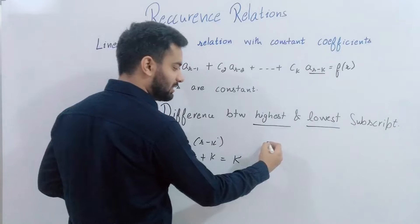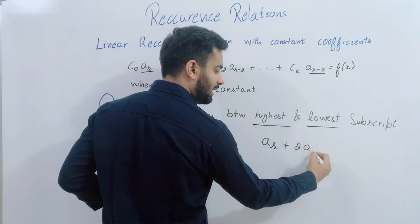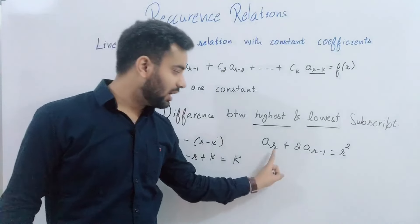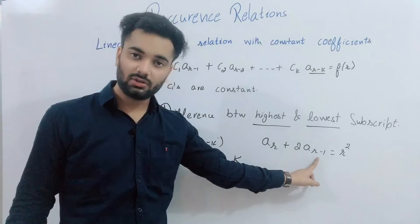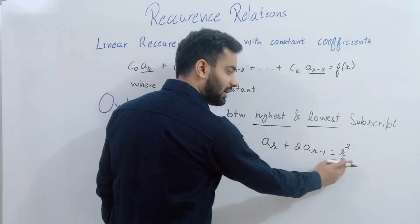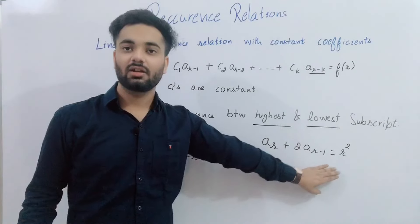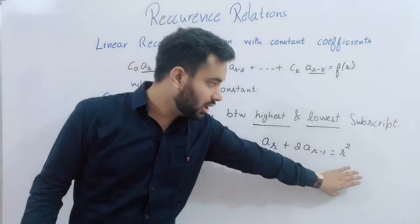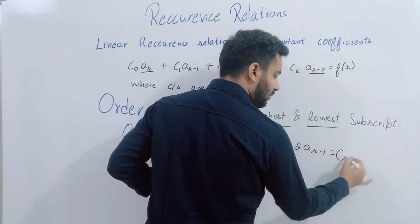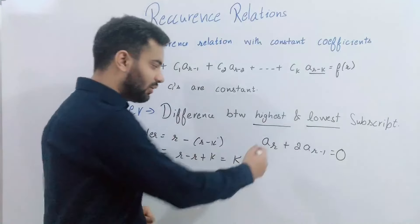Let us look at an example. Given: A(R) + 2·A(R-1) = R². What is the order? Highest subscript is R, lowest is R-1, so the order is R minus (R-1) = 1. Now, the right-hand side is R², so this is a non-homogeneous equation. If the right-hand side were 0, then it would be a homogeneous equation.